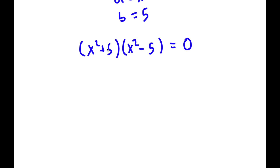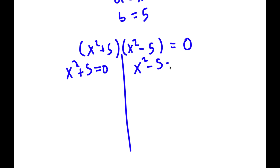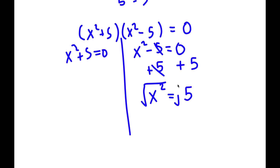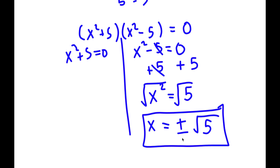So now this gives me two equations. I have x squared plus 5 is equal to 0, and I have x squared minus 5 is equal to 0. Let's first start with x squared minus 5 equals 0. I'm going to add 5 on both sides, so x squared is equal to 5. Taking the square root on both sides, x is equal to positive or negative square root of 5. So these are two solutions to this problem.